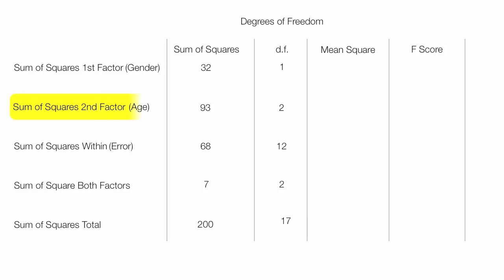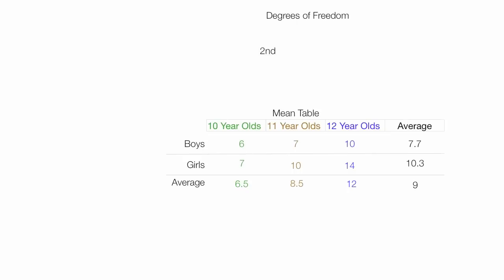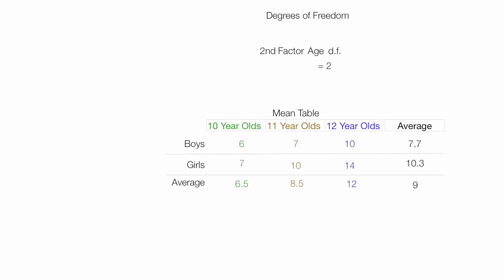For the second factor, the degrees of freedom is calculated by taking the number of columns minus 1. I have 3 columns minus 1, which equals 2. So the degrees of freedom for the second factor — age — is equal to 2.